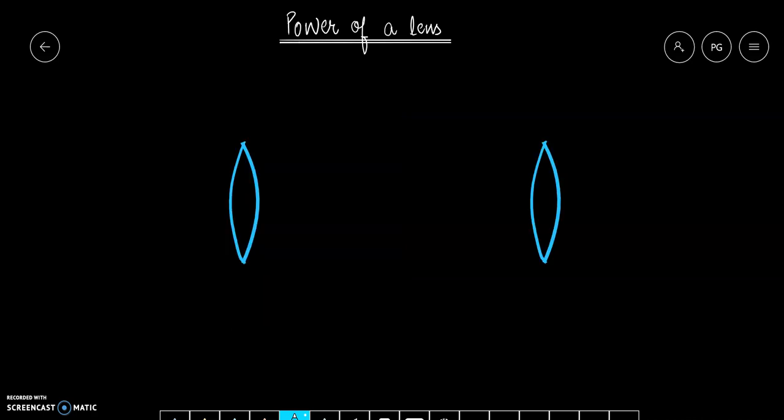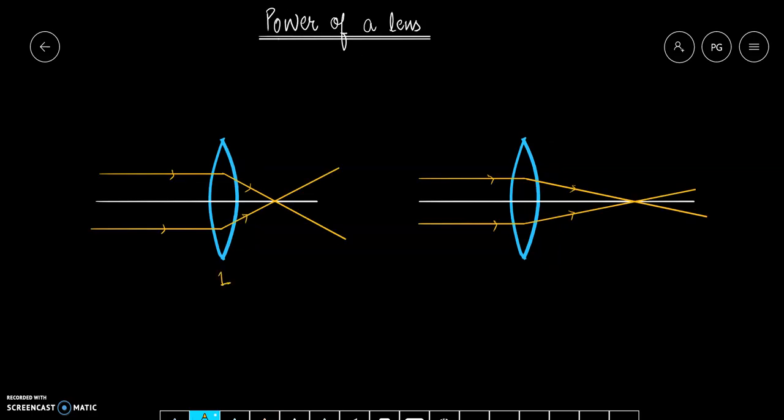Let us suppose I have two convex lenses. The first lens converts parallel coming rays to converge at a closer point, but the second lens converges them at a farther point. This means that the first lens is more converging but the second lens is less converging.